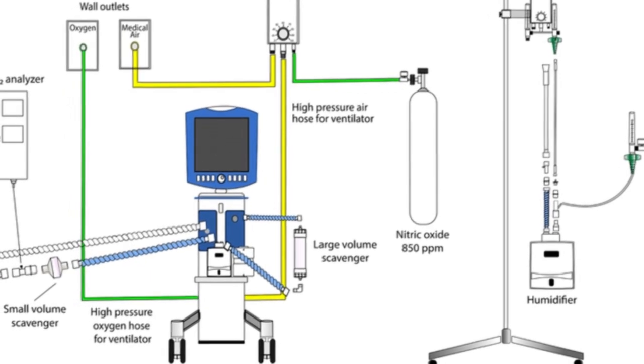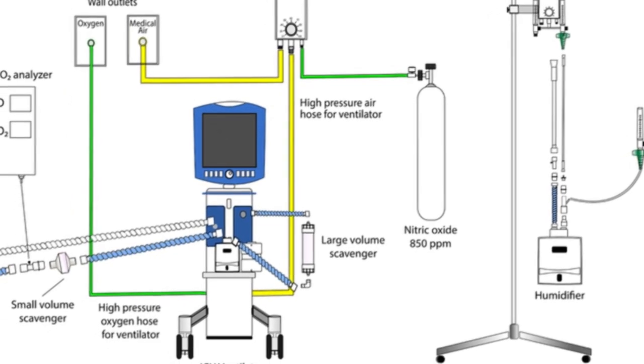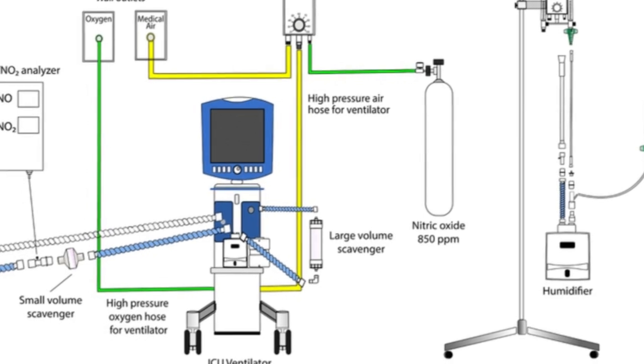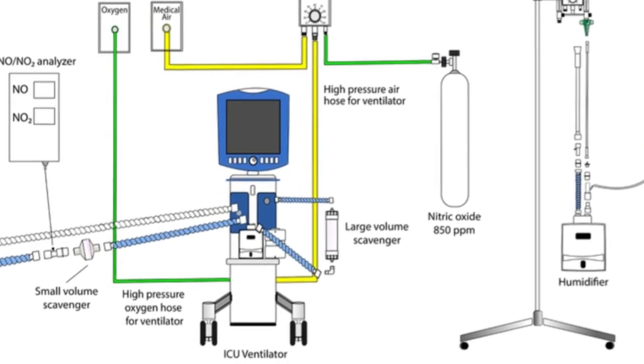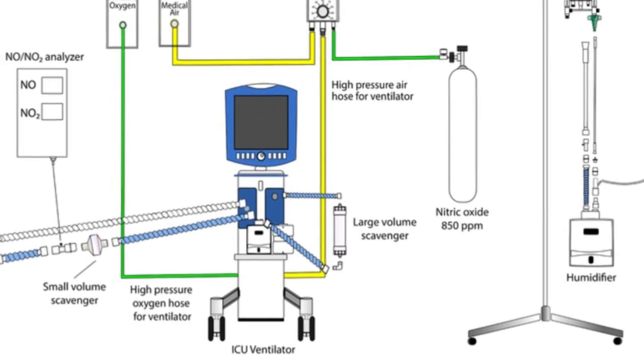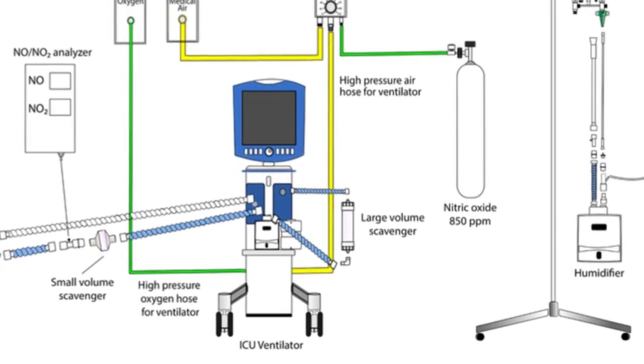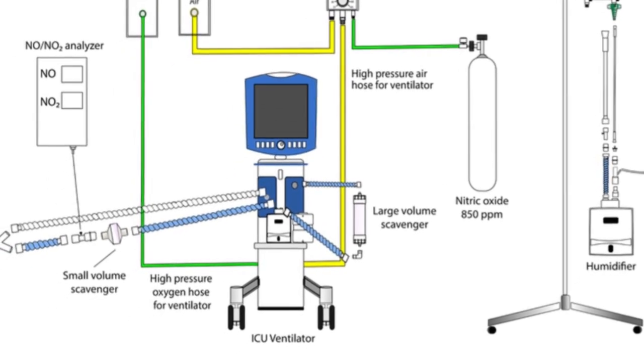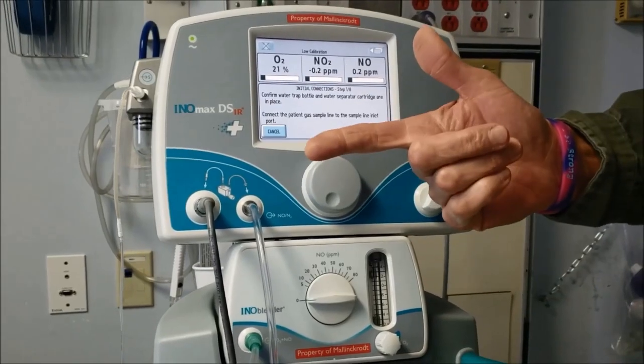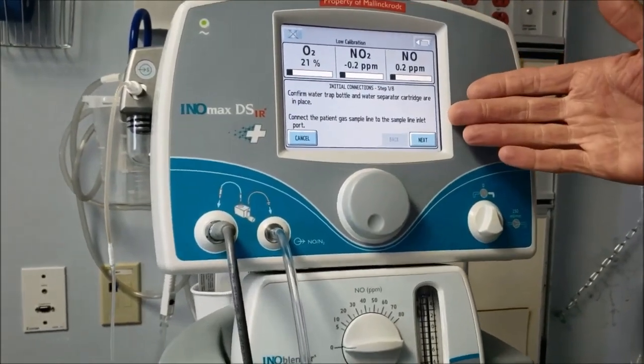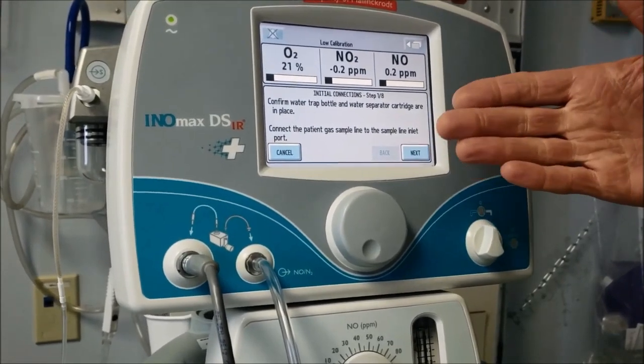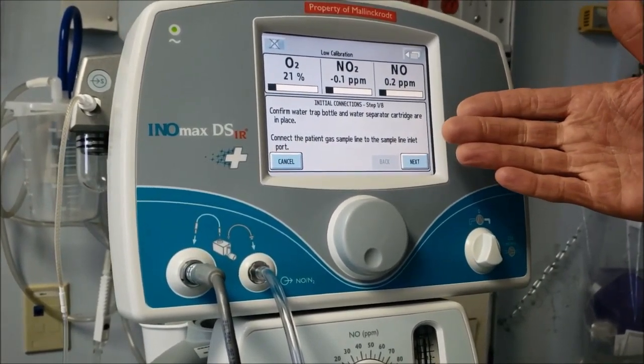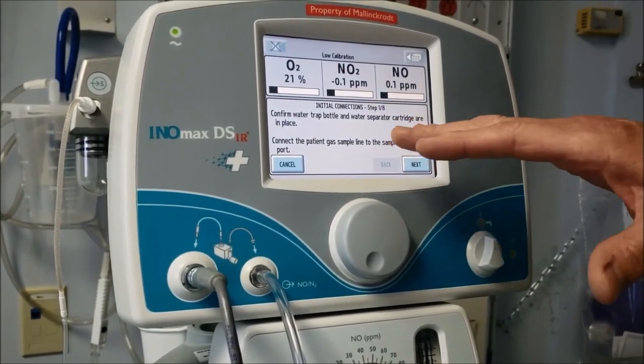Illustration how the nitric oxide is delivered into the high-flow nasal cannula device. The test gas is delivered to the system by placing Y-adapter before the humidifier. A commercially available blender mixes oxygen and medical air and is regulated by the RT to reach the target oxygen. The flow of nitric oxide is titrated to reach the desired concentration of 80 ppm. This mixture is then humidified and heated to a temperature of 34 degrees Celsius.